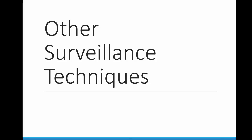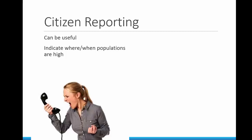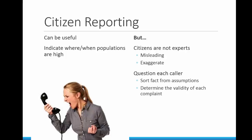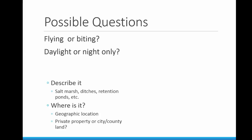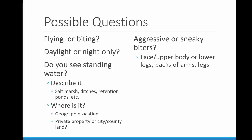There are other surveillance techniques that you might find useful. One of them is citizen reporting, and it can be useful and can often indicate where and when populations are high. But citizens are not experts, and often the information they give can be misleading or can exaggerate the situation. It's important to question each caller and sort fact from assumptions. Some common questions are: Are the mosquitoes actually biting or attempting to bite? Are the mosquitoes biting during daylight hours, or do they bite at night? Are there areas of flooded forest or clear-cut timber harvest going on nearby? Are the mosquitoes persistently aggressive — do they try to bite you on your face or upper body, or are they sneaky and bite you on the ankles and lower backs of your arms? Have you noticed a problem in the past, and where have you noticed it?